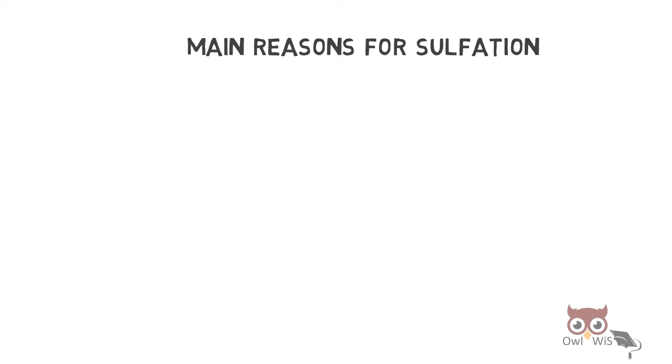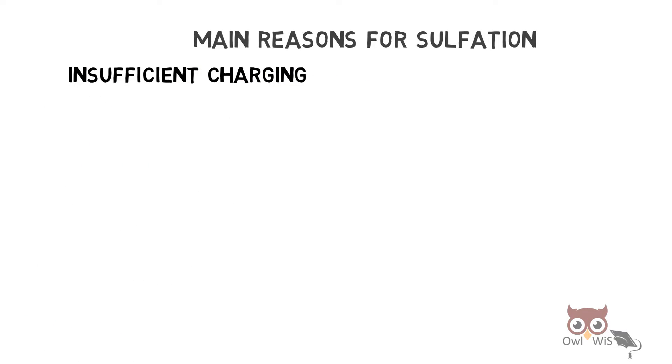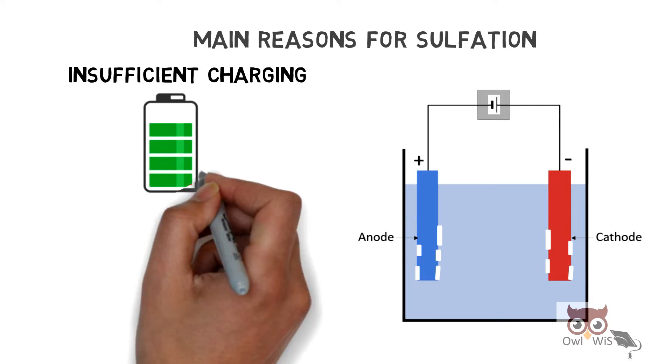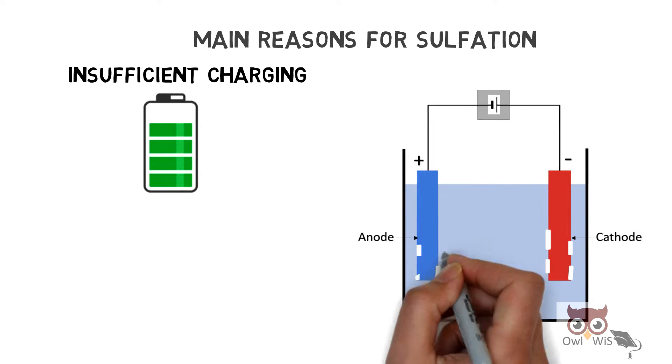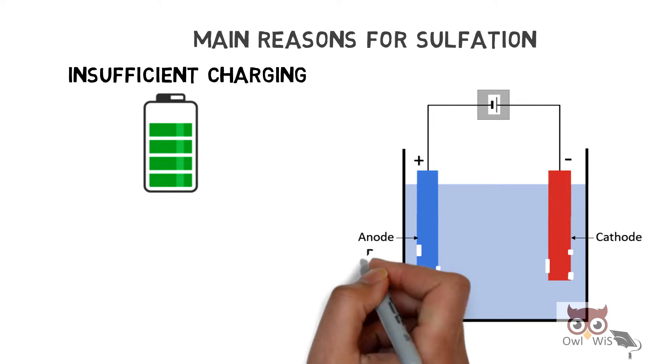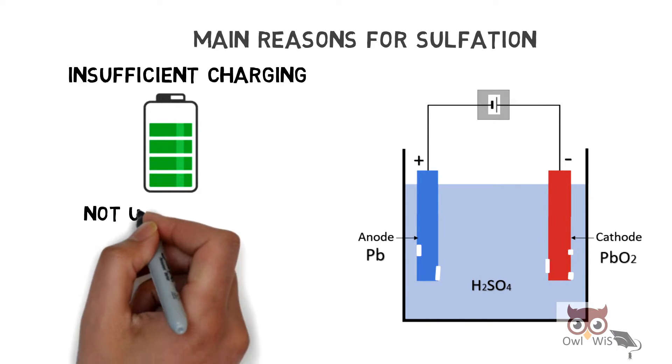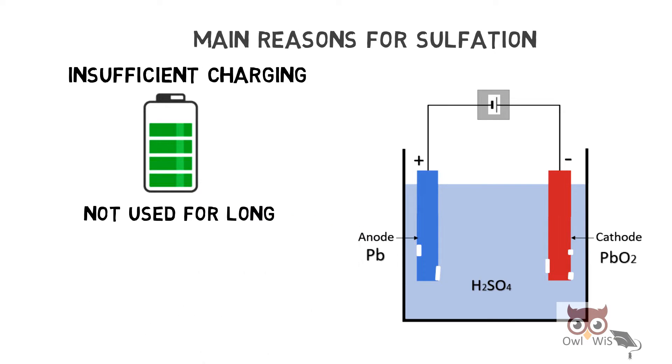Whenever the battery is discharged and not charged fully, the lead sulfate doesn't convert completely to lead and lead peroxide, and these lead sulfate crystals remain on the electrodes.